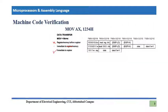The data format for this instruction has the opcode 1011, then the W bit indicating the size of the operation, then the register field indicating which register we are using, and then the immediate data value. In this example, the data is the immediate value 1234h.